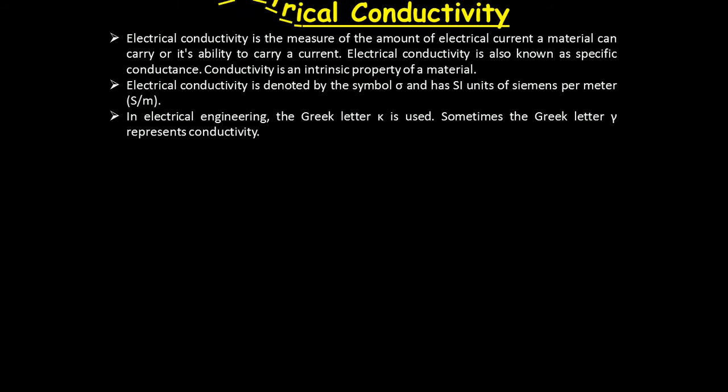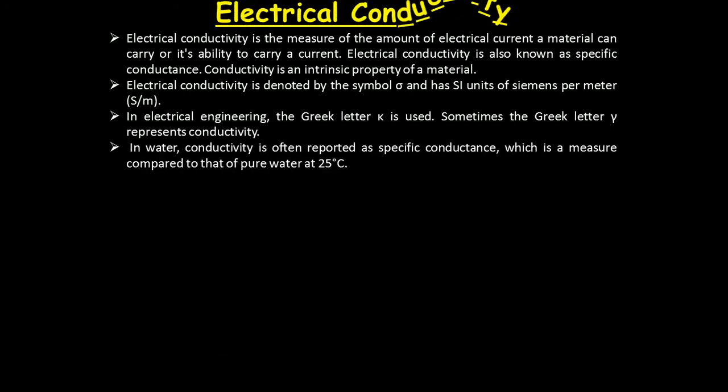Electrical conductivity is denoted by the symbol σ and has SI units siemens per meter. In electrical engineering, the Greek letter κ is used sometimes. Sometimes the letter γ is used to represent conductivity. In water, conductivity is often reported as specific conductance, measured compared to pure water at 25°C.